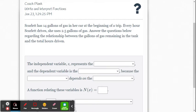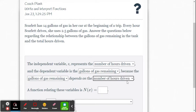So the independent variable X represents number of hours driven, and the dependent variable is the gallons of gas remaining because the gallons of gas remaining depends on the number of hours driven.